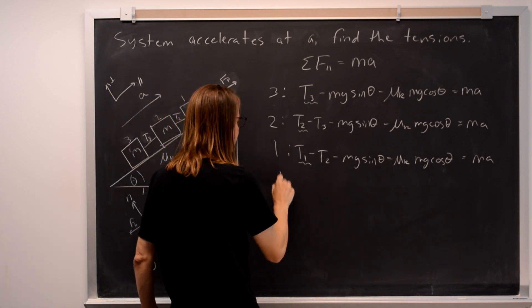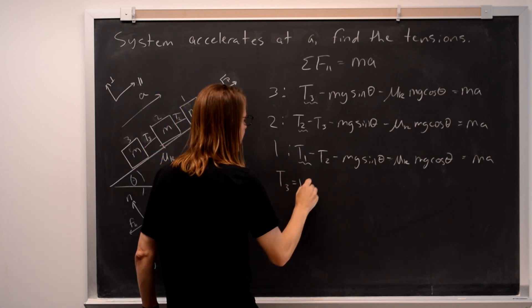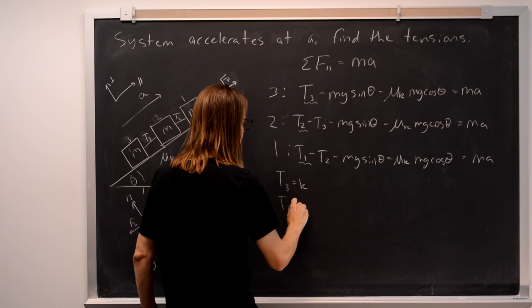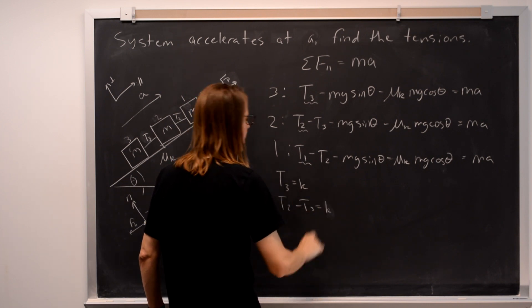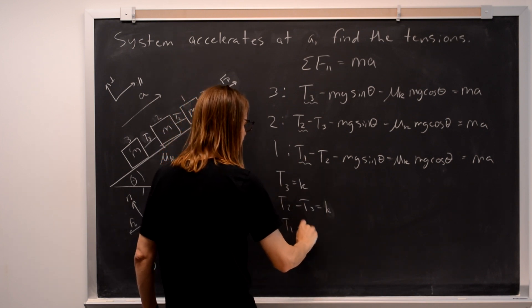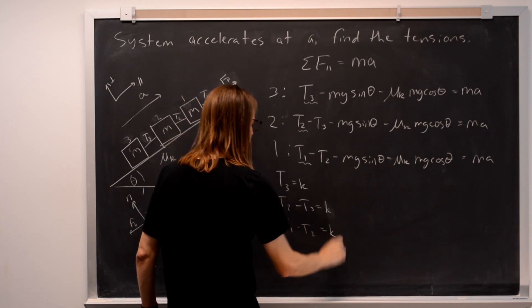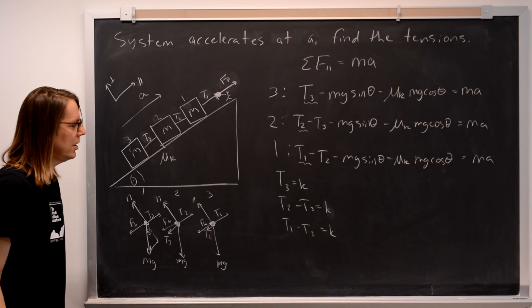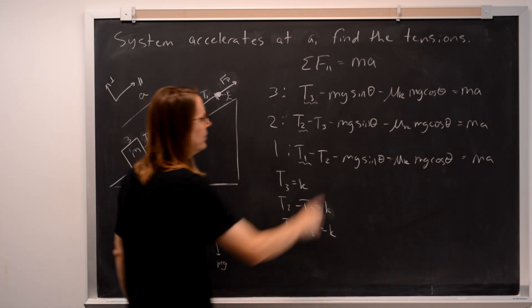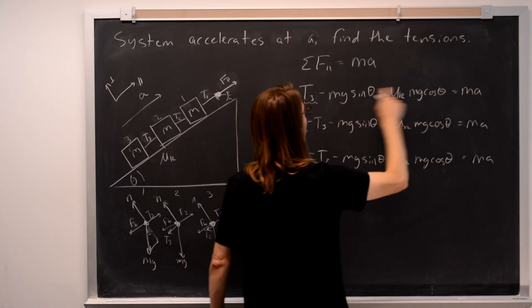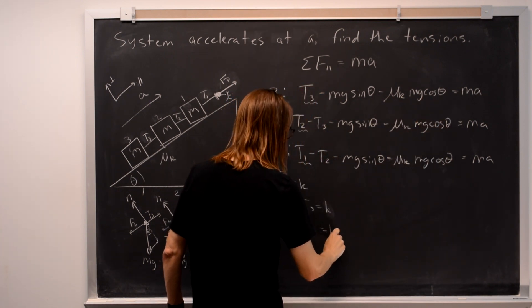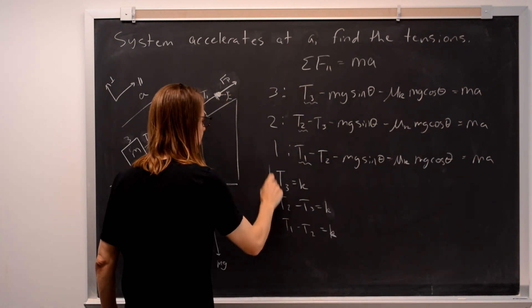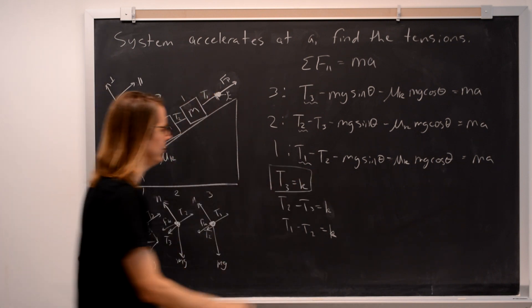So you could write this T3 equals k. T2 minus T3 equals k. And then T1 minus T2 equals k. They all equal the same constant. If we said k was equal to what? Ma plus mg sine theta plus mu k mg cosine theta. Interesting. Well, in that case, you're done. Here, you have T3.